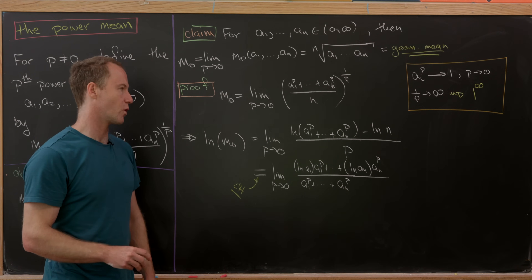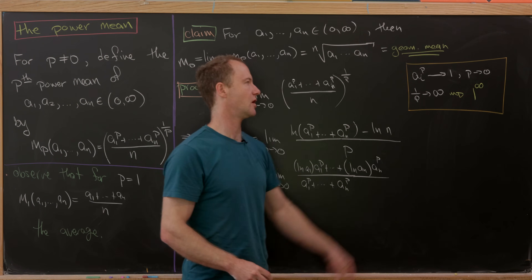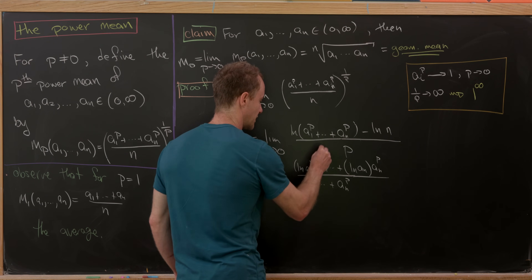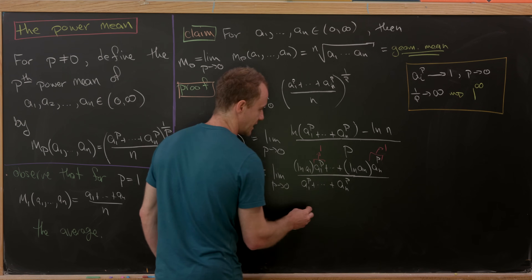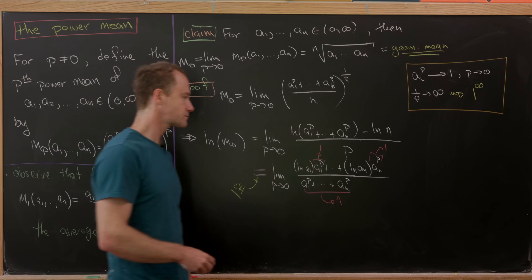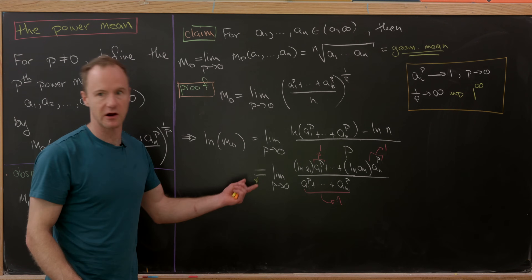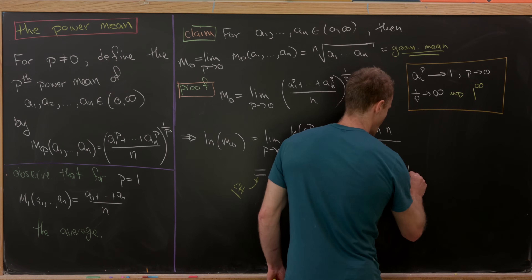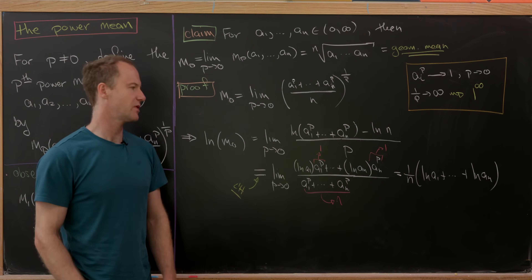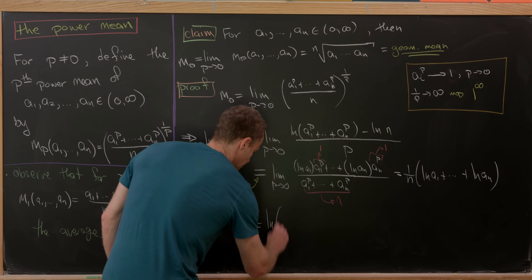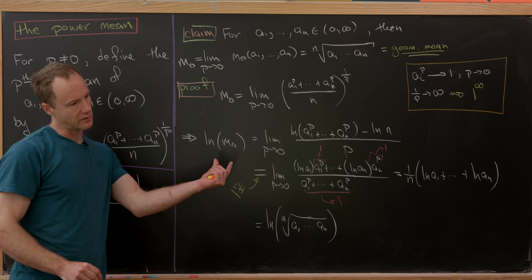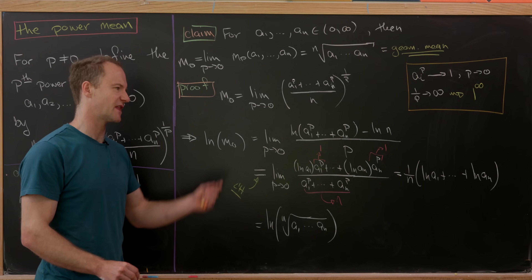Now checking: do we still have an indeterminate form? As p→0, all aᵢ^p approach 1, so each term in the numerator approaches ln(aᵢ)·1 = ln(aᵢ), and the denominator (sum of aᵢ^p) approaches n. So the limit is (1/n)(ln a₁ + ... + ln aₙ).